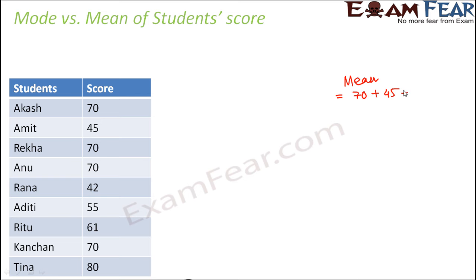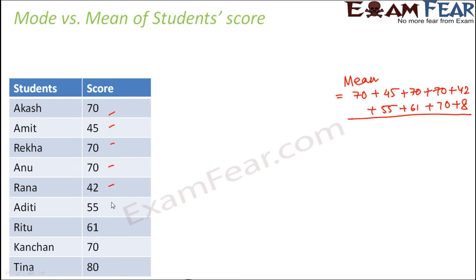To calculate mean, we sum all the scores: 70 + 45 + 70 + 70 + 70 + 42 + 55 + 61 + 70 + 80, then divide by the number of scores, which is 9 (wait — actually 10 scores). The mean comes out to 62.55. This means the average score of the class is 62.55 — if all students scored equally, each would have scored 62.55.